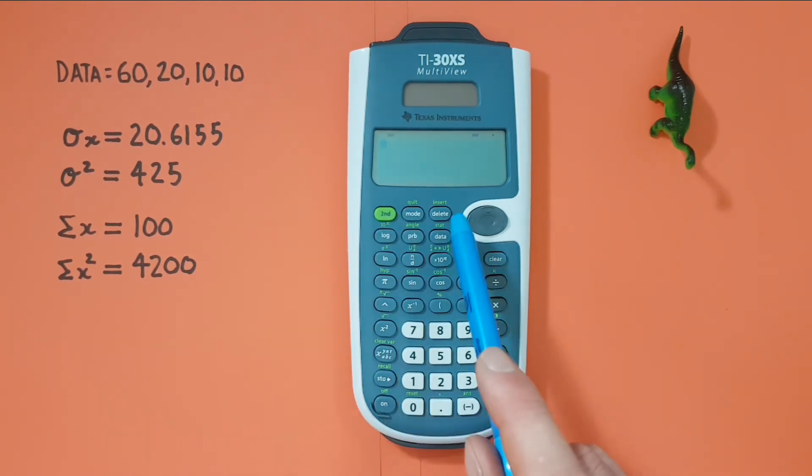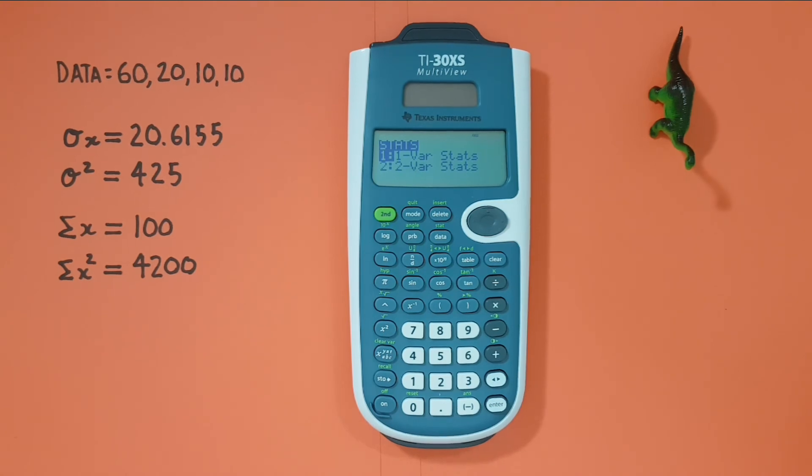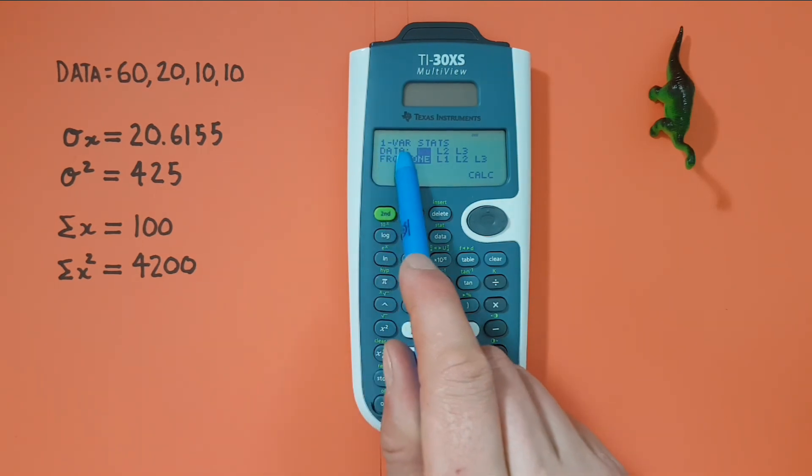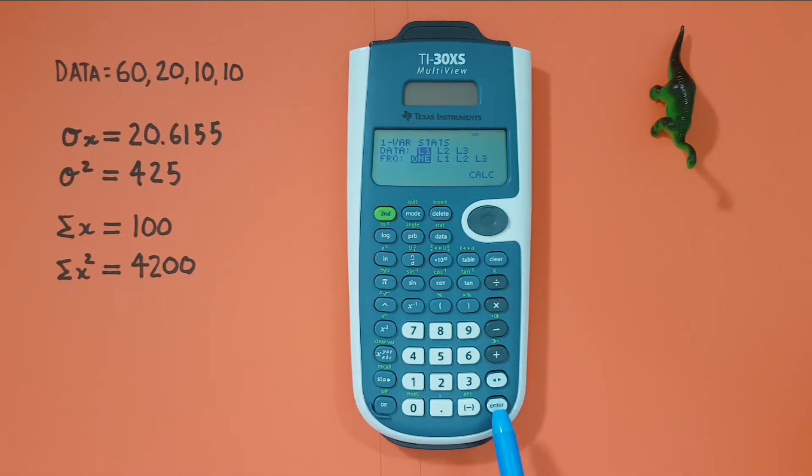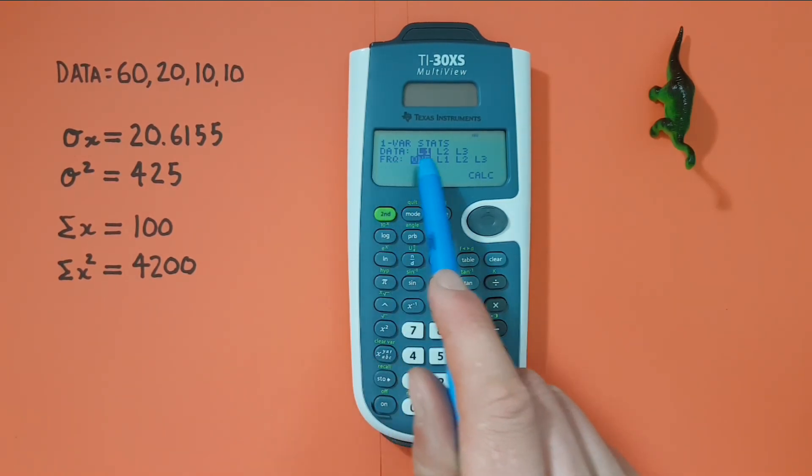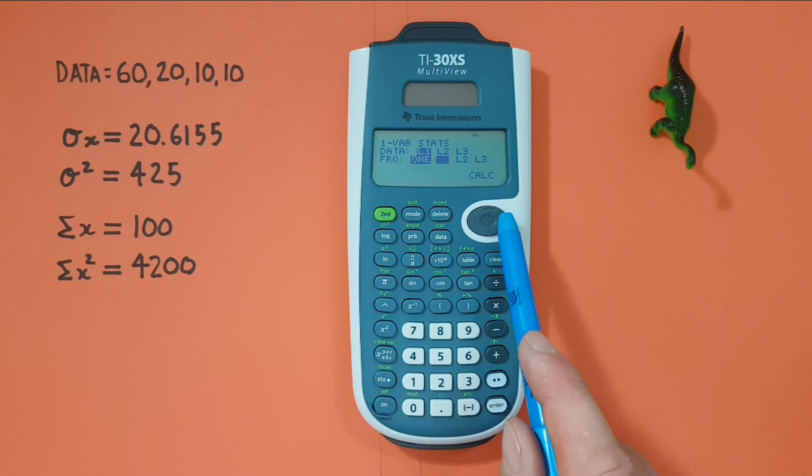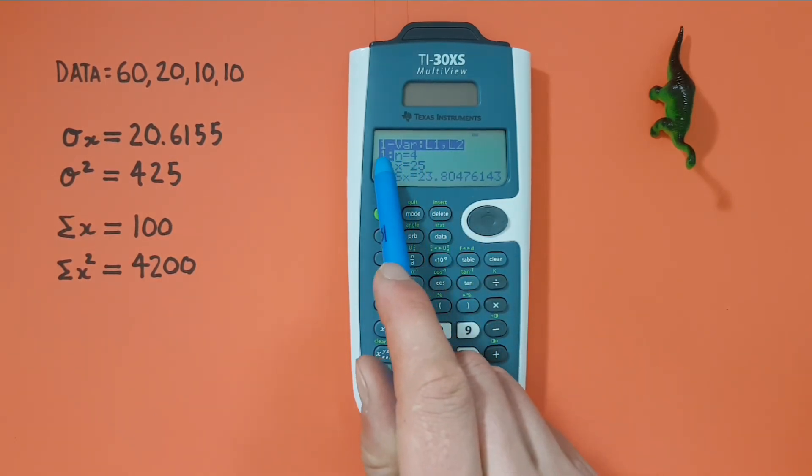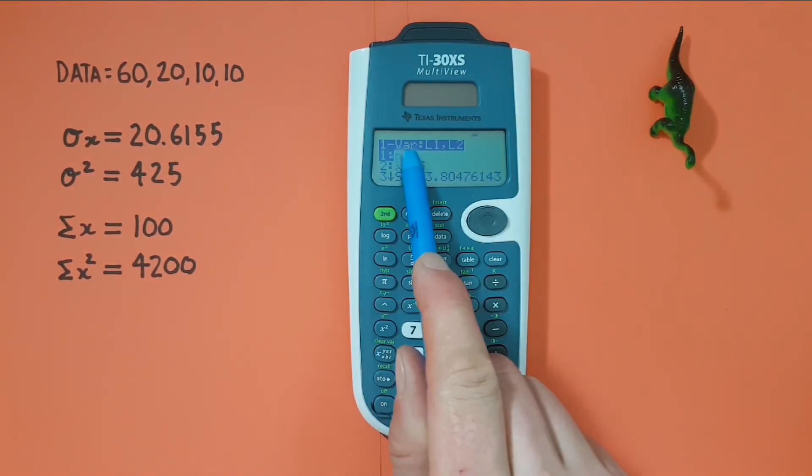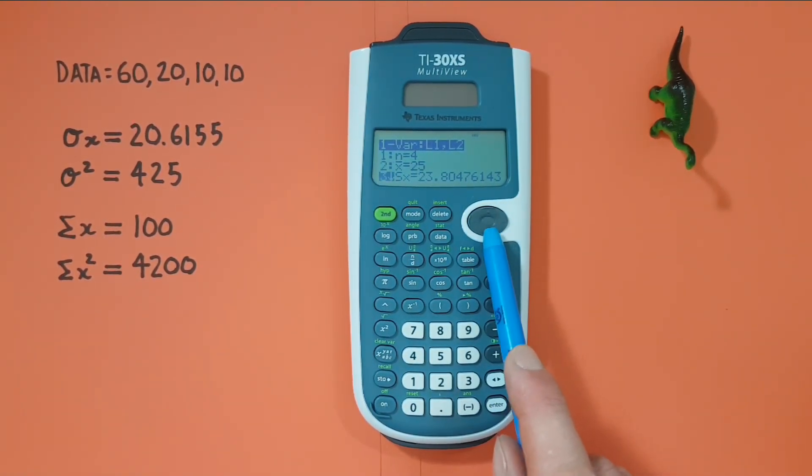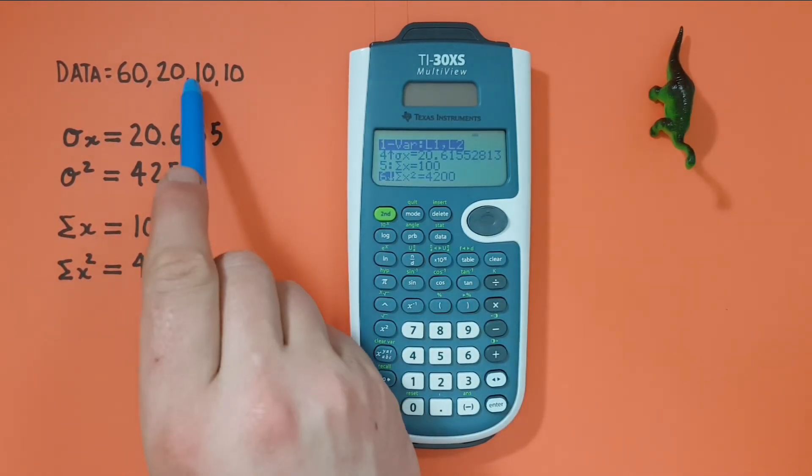And this time if we go into our stats menu and again choose one variable stats. Again, our data is in list1, so we'll press enter on that. But when it comes to frequency, we entered our frequency as list2, so we want to scroll over to L2 for that and press enter. And enter again for calc. And here we see one variable stats using list1 and list2, and we're getting the same result.